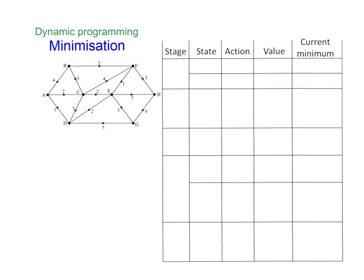We then work backwards in the same way. However, we need to present it in a particular way so that we can demonstrate the use of our algorithm. I'm going to explain how this table works. First of all, we have what we call our stage variable, and our stage variable tells us how many transitions we are away from our end point, which is H. So, for example, from F, I'm one transition away, and we're looking at the maximum number of transitions. So F is stage 1 and G would also be stage 1. E, because the maximum number of transitions to get to H is 2, would be stage 2.